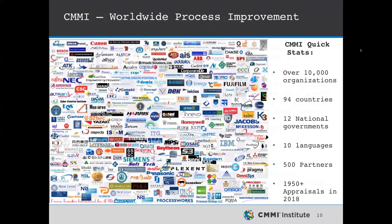The big brother model to the DMM — sharing the same approach and basic architecture — is the most successful process improvement model in the world. There were 1,950-plus appraisals against this model in 2018 alone among 500 partners in many countries, showing excellent growth. The development model is strong in South and Central America, China, and India — India was an early adopter, using CMMI to convince companies they could reliably outsource software development because their practices were very mature.